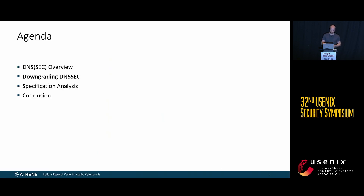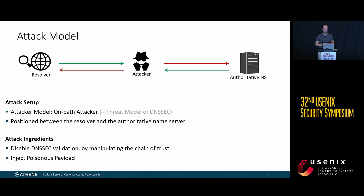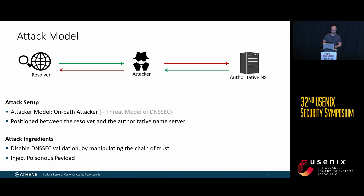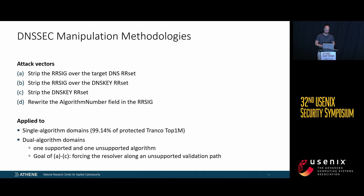Let's see how we downgrade DNSSEC. Our attacker model is an on-path attacker positioned between the resolver and the authoritative name server — essentially the exact threat model against which DNSSEC is meant to protect. Our attack has two ingredients: first, we disable DNSSEC validation by manipulating the chain of trust, and then the attacker injects the poisonous payload. We developed four attack vectors, which we call A, B, C, and D.